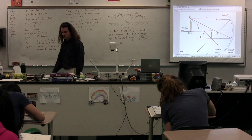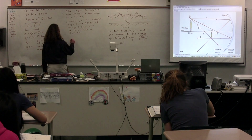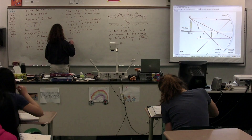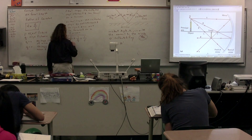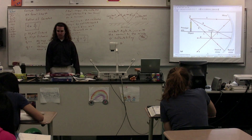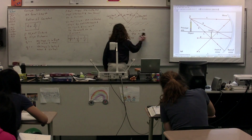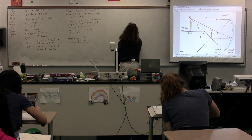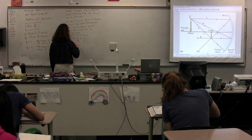We can relate the object distance, the image distance, and the focal length via this equation: one over the image distance plus one over the object distance equals one over the focal length. We also have something called magnification, which is exactly what it sounds like — it's the magnification of the object versus the image. Capital M stands for magnification.